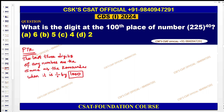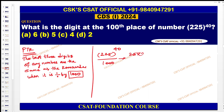So we need: 225⁴⁰ divided by 1000. Now split 225 as 25 × 9, giving us (25 × 9)⁴⁰ ÷ 1000.